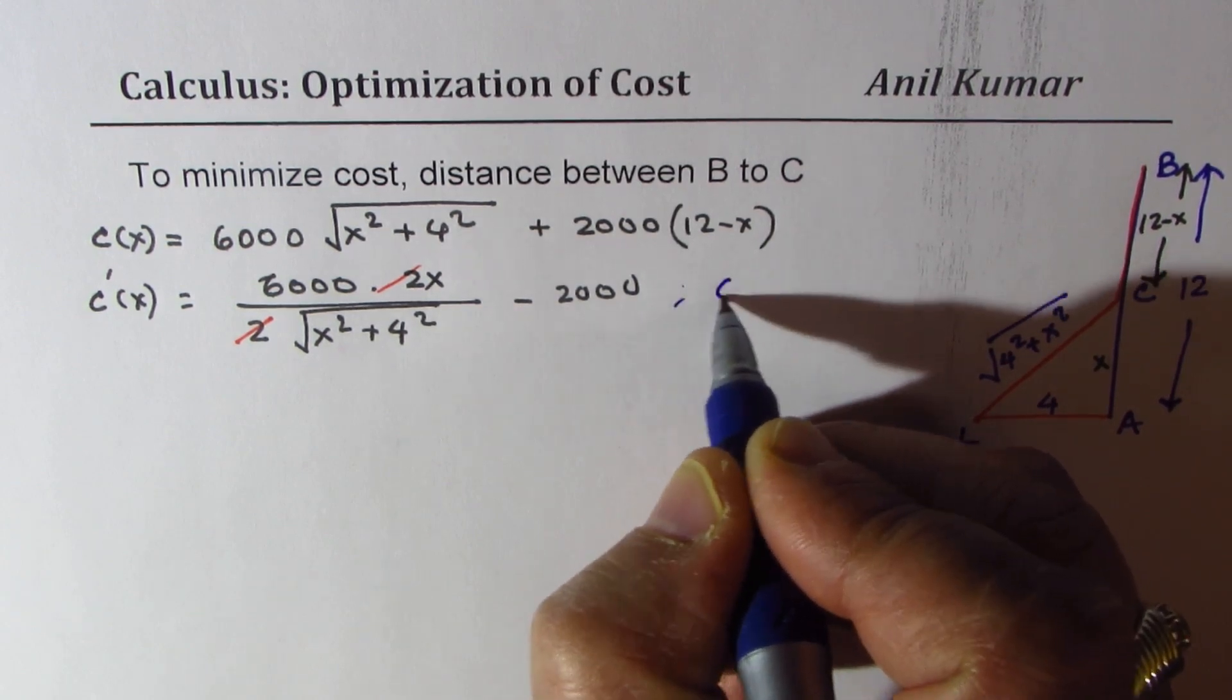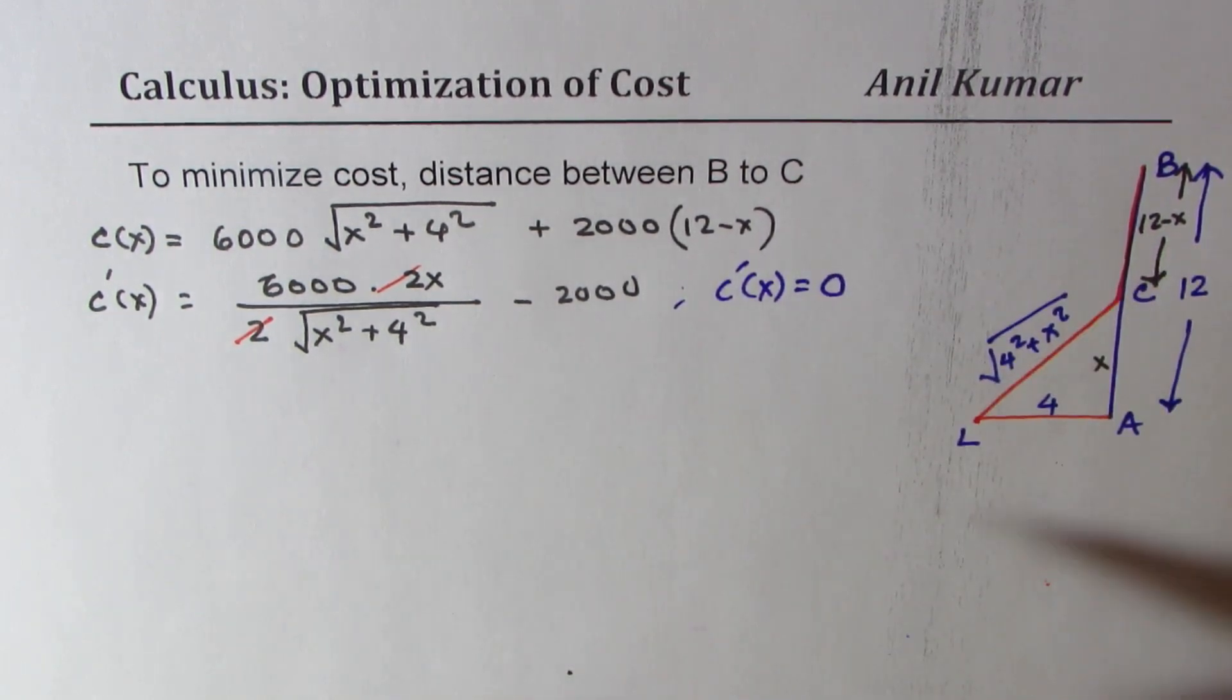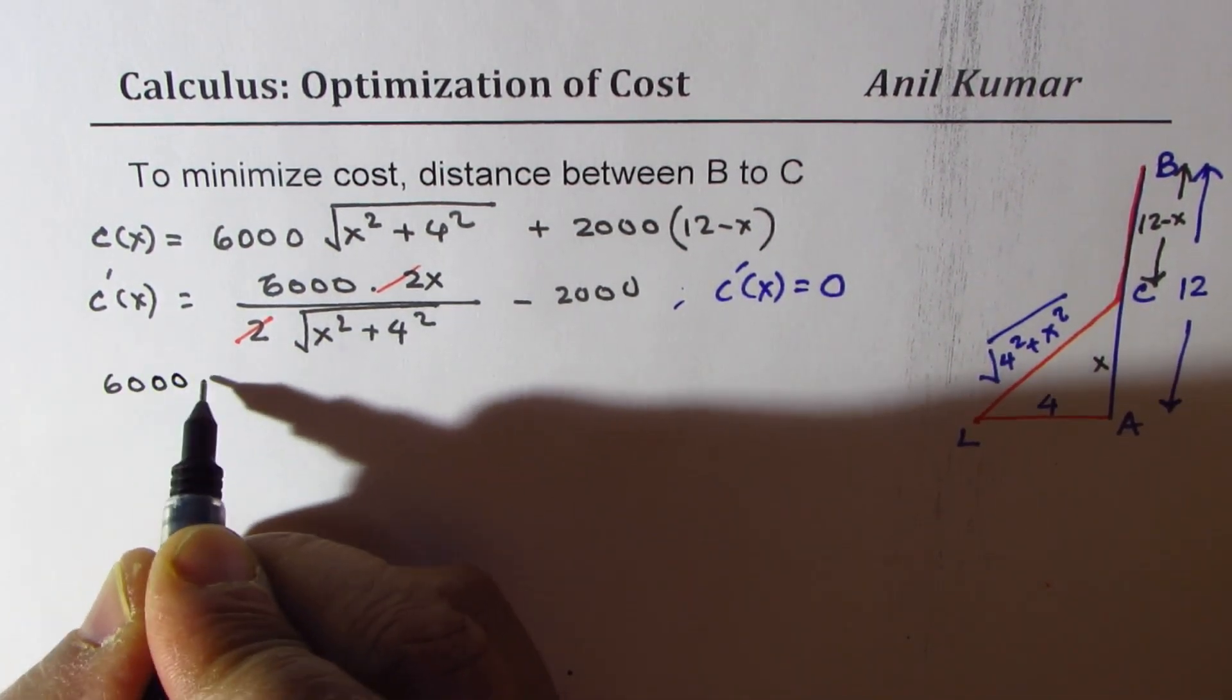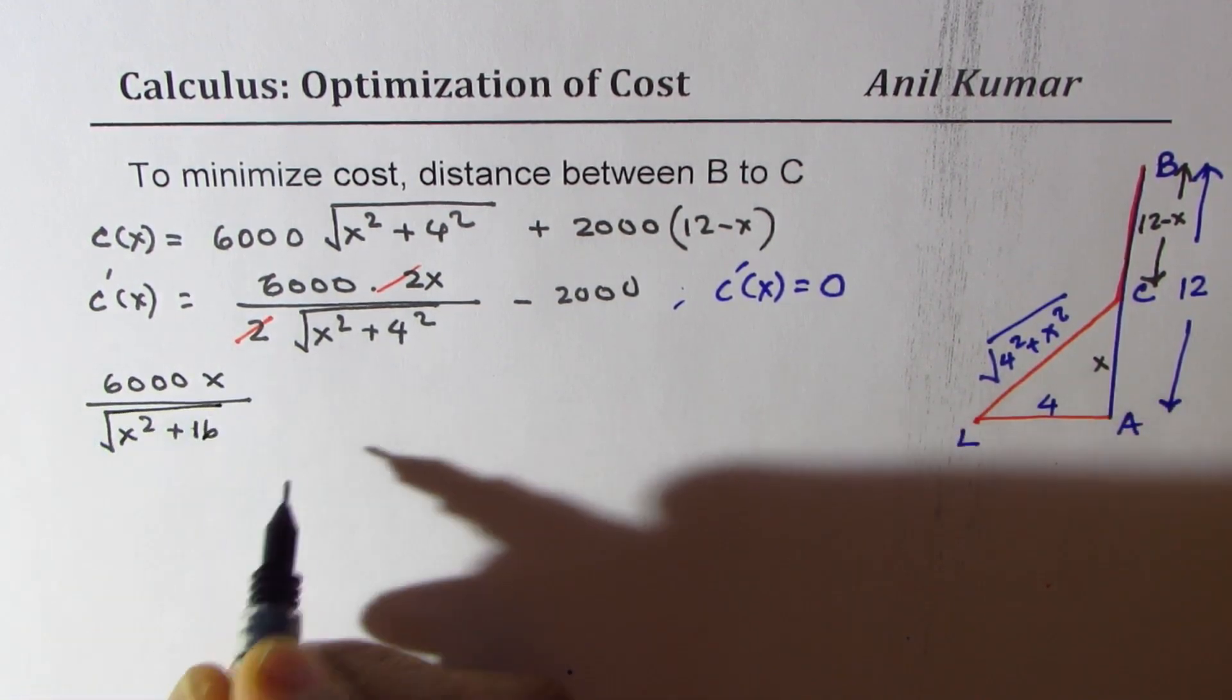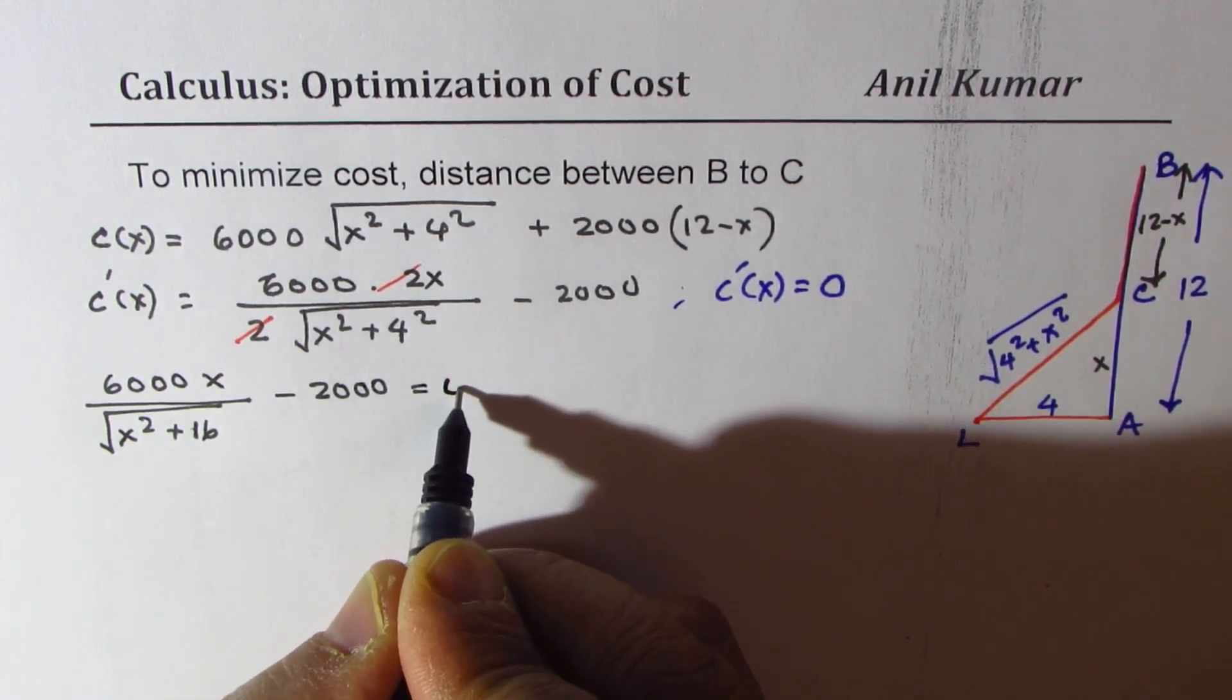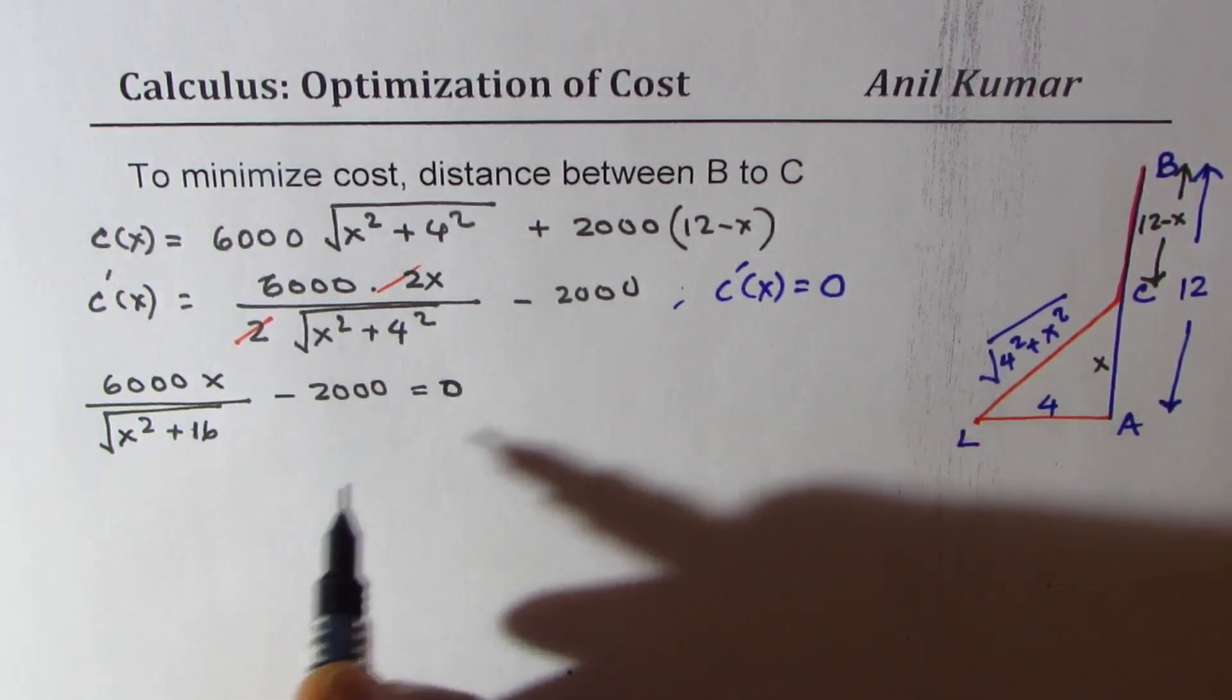we know that C'(x) should be equal to 0. So equating it to 0, we get 6,000x over square root of x square plus 16, which is 4 square, minus 2,000 should be equal to 0. Now taking it to the right side,